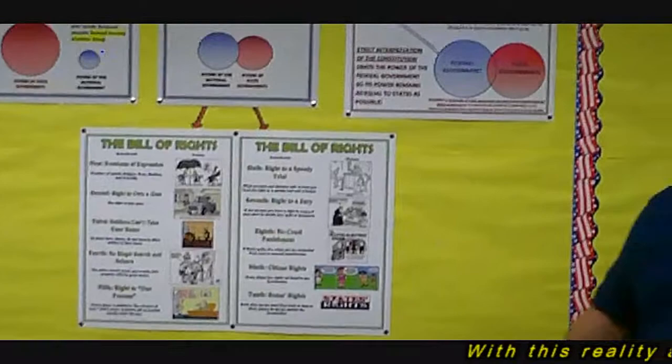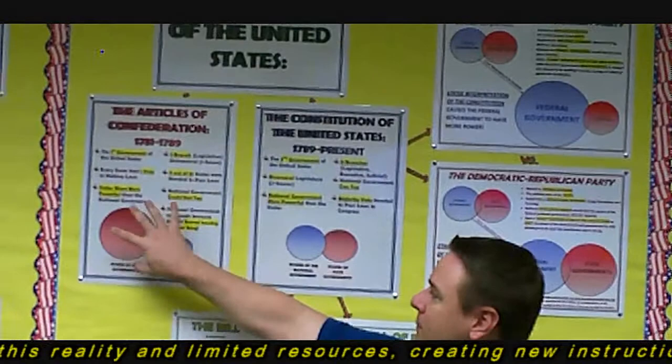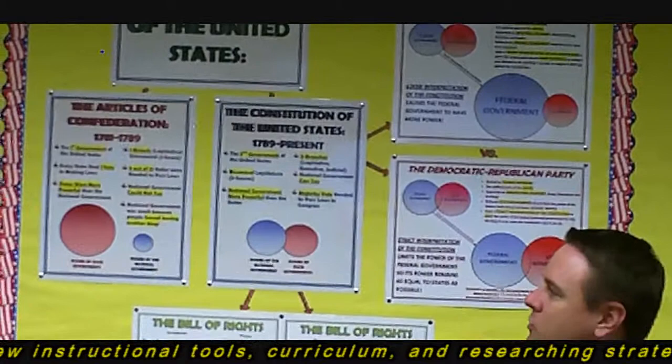So even without being able to read it, they'll know that the state one's red, and it's way bigger than the national government than the Articles of Confederation. So visually, they can get some cues.